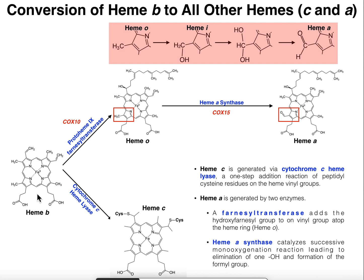But there are other forms of heme that are going to come from this molecule right here. The one down here at the bottom is heme C — we'll look at that in a second — but the first one we'll look at is actually the synthesis of heme A. So let's go into that.